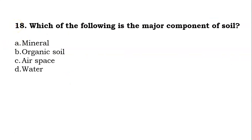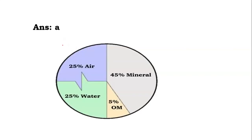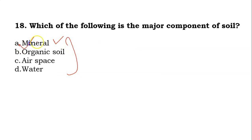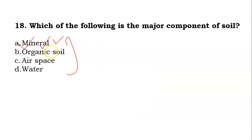The eighteenth question: which one of the following is the major component of the soil? You have to identify which component has the highest percentage share in soil formation. The answer is A — mineral. The mineral constitutes 45%, air constitutes 25%, water constitutes 25%, and organic material constitutes 5%. So mineral constitutes the major portion of the components of soil.